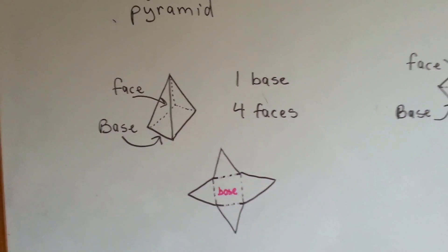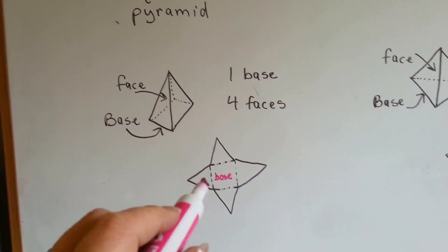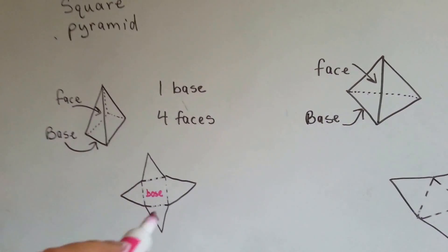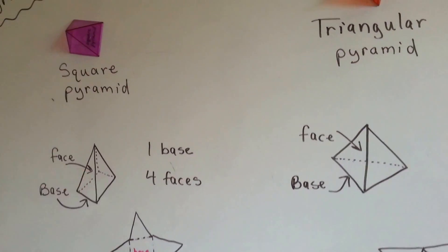I bet you could get some paper, construction paper, and make one of those. You could make your own square pyramid. Maybe you could tape the edges together and it'll look like that when you're done.